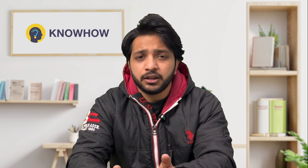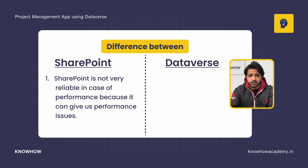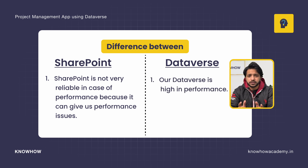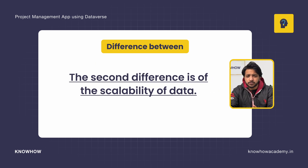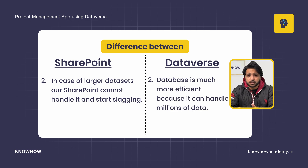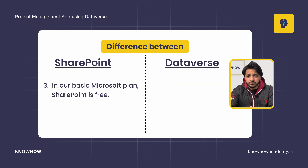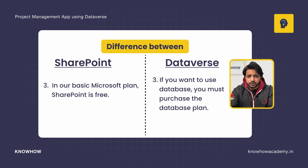The first difference between SharePoint and Dataverse is that SharePoint is not very reliable in terms of performance and can give performance issues, while Dataverse is high in performance. The second difference is scalability — for larger datasets SharePoint cannot handle it and starts lagging, but Dataverse can handle millions of records. The third difference is cost: in a basic Microsoft plan SharePoint is free, but Dataverse requires a separate paid plan.